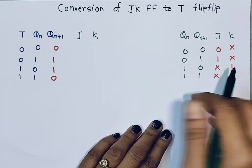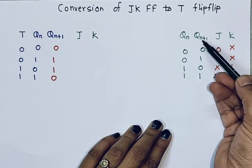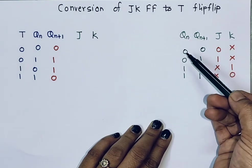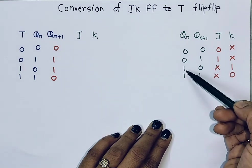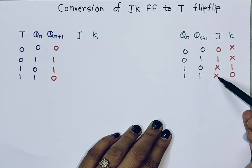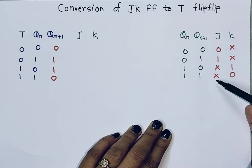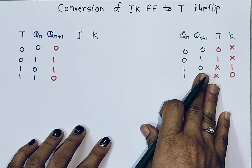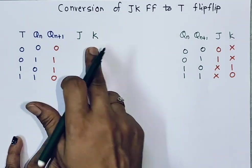We need to write the excitation table for the JK flip-flop. This table has present state output and expected next state output, and from those we identify values of J and K. The entries are: for 0→0, J=0 and K=don't care; for 0→1, J=1 and K=don't care; for 1→0, J=don't care and K=1; for 1→1, J=don't care and K=0.